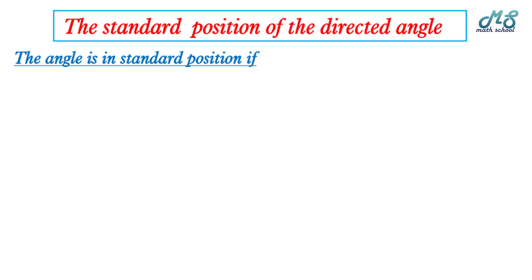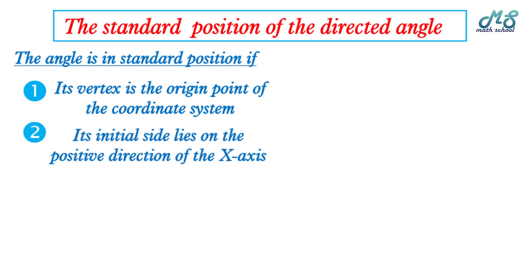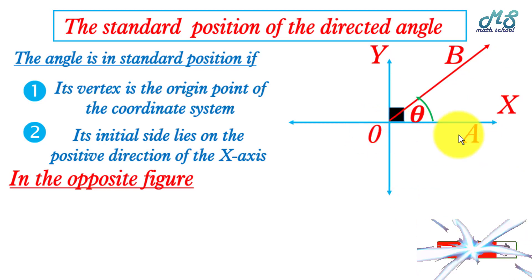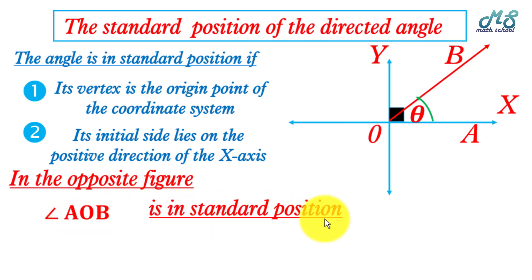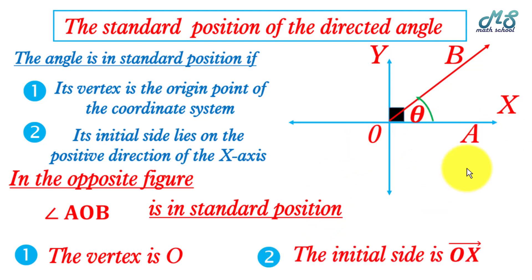The standard position of the directed angle: the angle is in standard position if its vertex is the origin point of the coordinate system, and its initial side lies on the positive direction of the x-axis, which is ray OX. In the figure, the directed angle AOB has measure theta. The initial side is ray OX and the vertex is O, so angle AOB is in standard position.